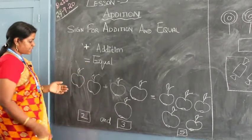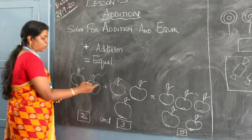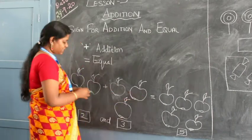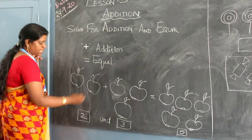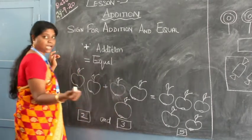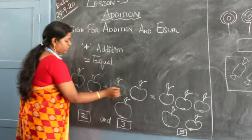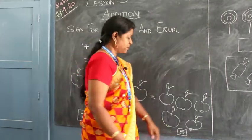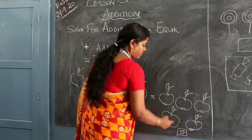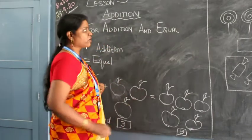See here, initially what you used to do, you used to count the drawing and write. Right. So here we have two apples. Here we have three apples. Together how many? One, two, three, four, five. So here we have five apples. So it is one, two, three, four, five. Right. This you have already learned.